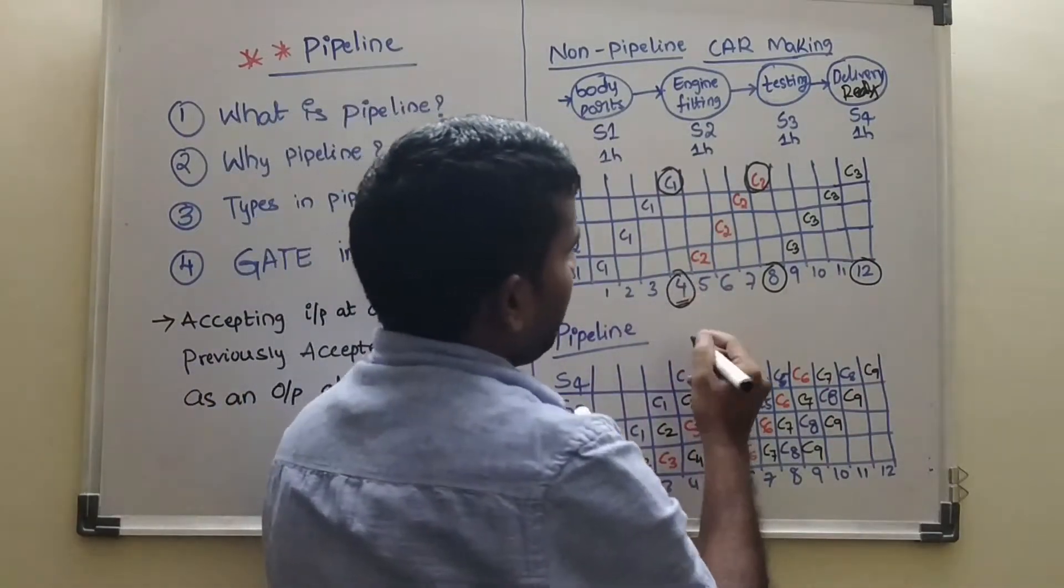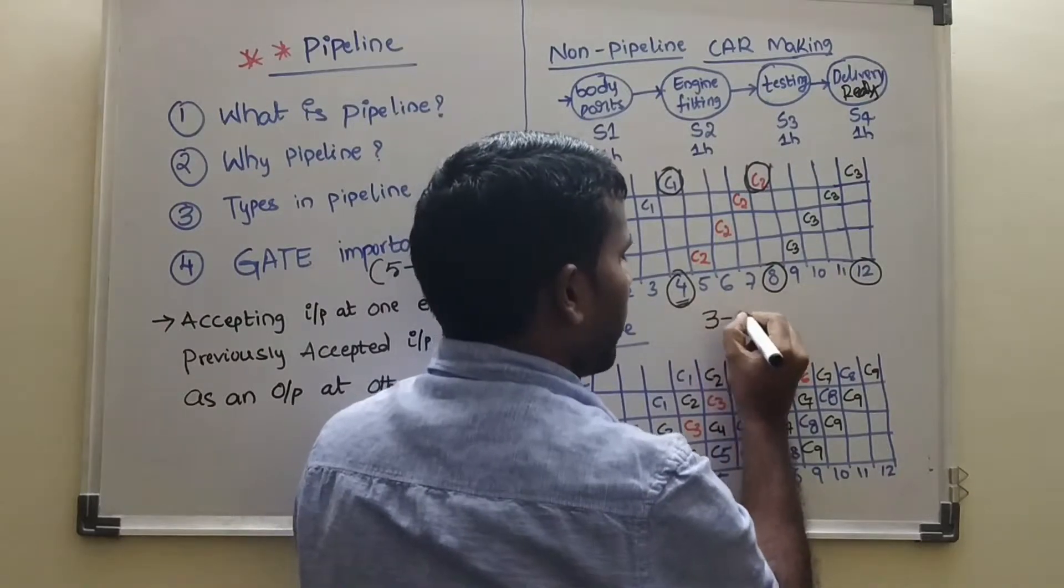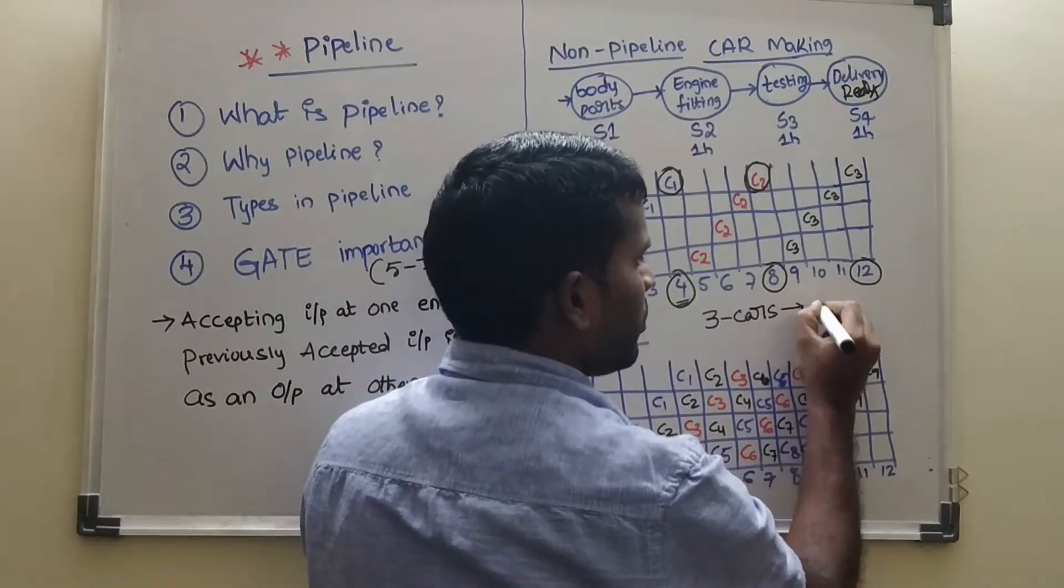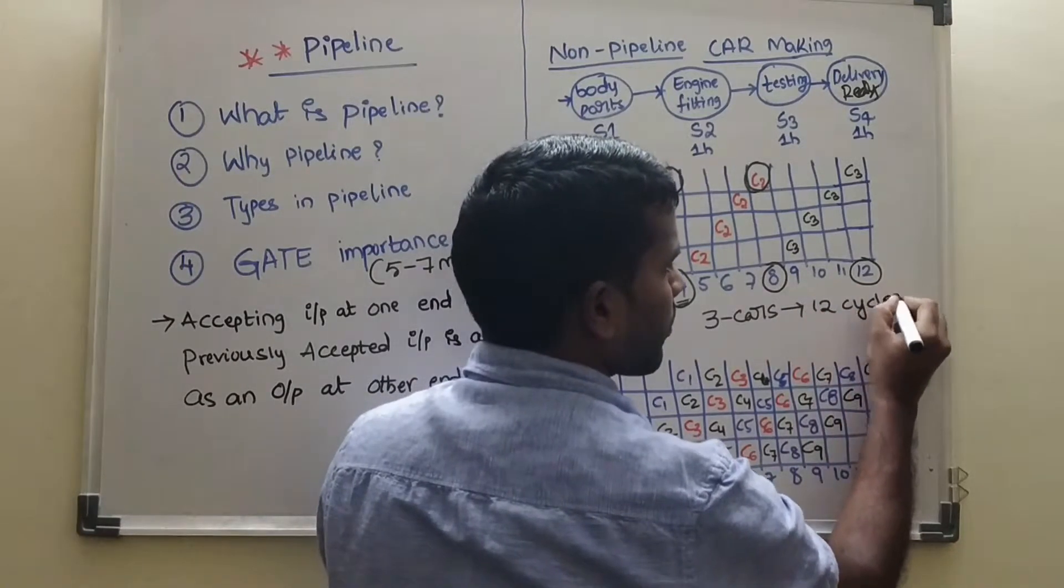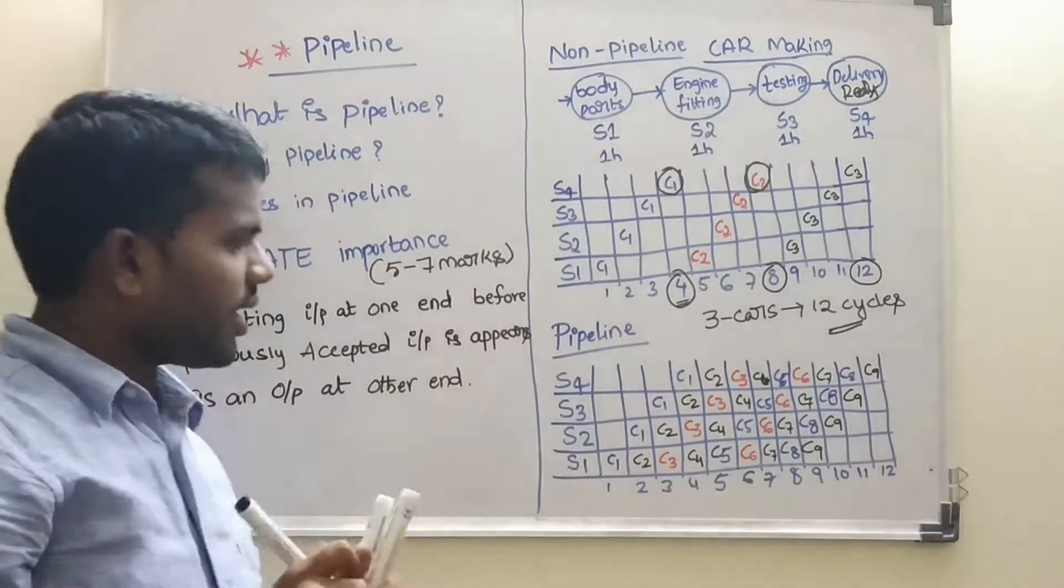So in pipeline, what happened? To make 3 cars, non-pipeline, 3 cars, it has taken 12 cycles. 12 cycles. See, if you see it in pipeline, what will happen?